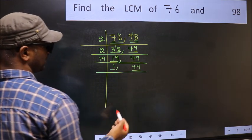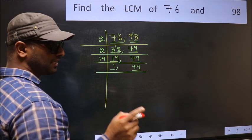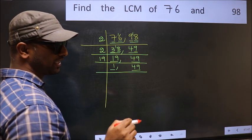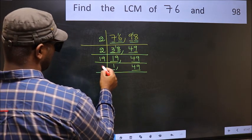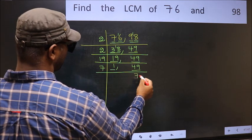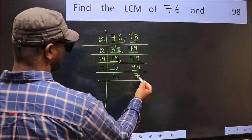So focus on the next number 49. Always remember 7 times 7 is 49. Now we have 7. 7 is a prime number so 7 once 7.